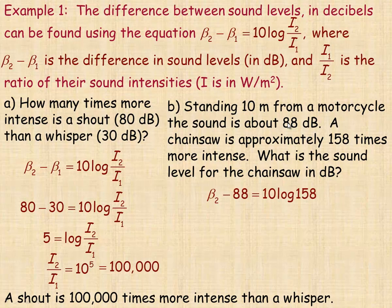So in the formula, the 88 would be the lower sound. So in place of β₁, we'll put 88. And the 158, as I said, is the ratio. So we're asked to solve for β₂ here. And so take the 88 over or add 88 to both sides, that's the calculation.